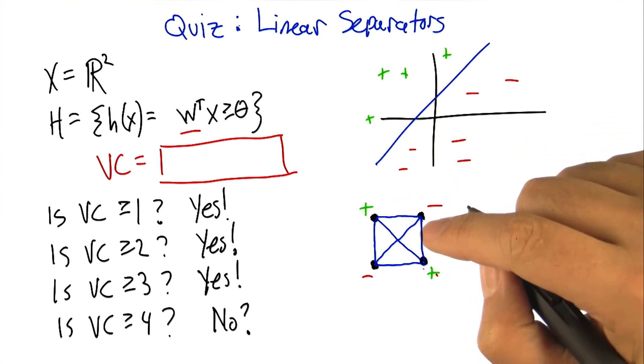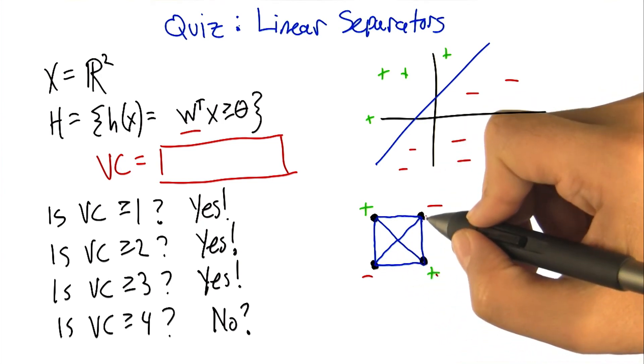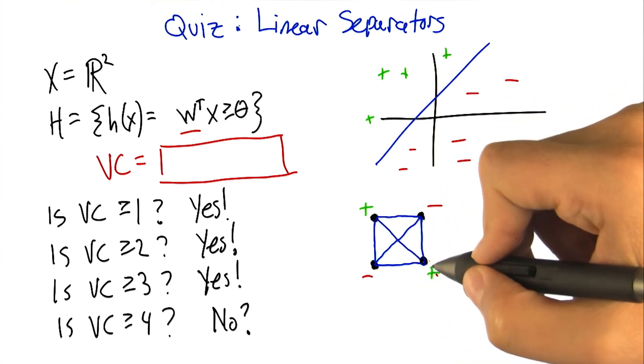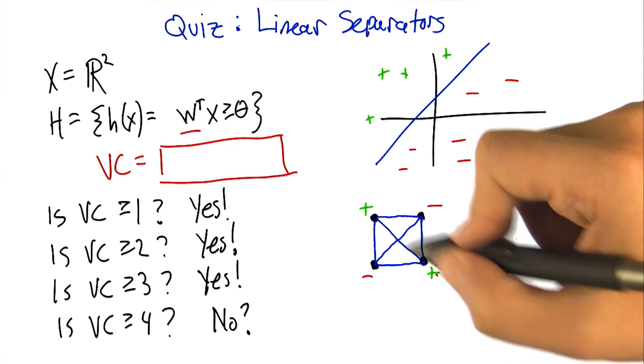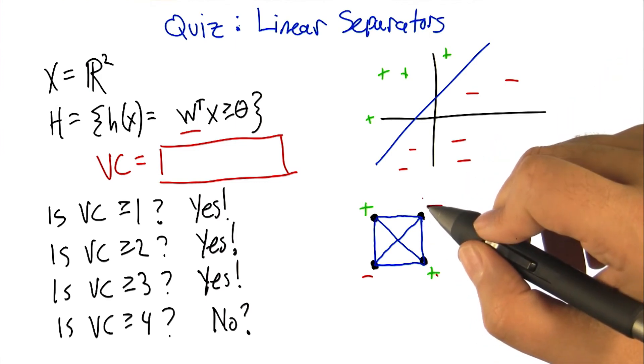But I meant it in a slightly different way, which is, if you think about these four points as actually being 0,0, 1,1, 0,1, and 1,0, then the label here is exactly XOR. And XOR is one of these things that you can't capture with a linear separator. So I think you got it. Well, that makes sense. And I think the important thing here is that, I like the XOR argument.